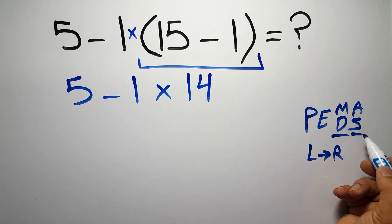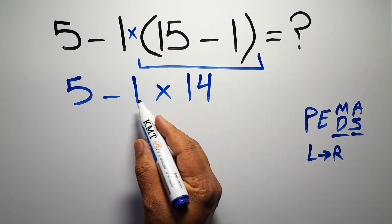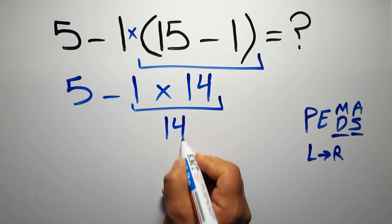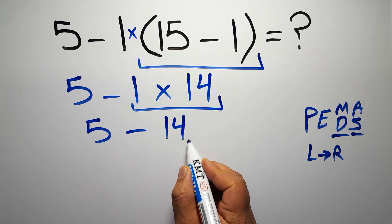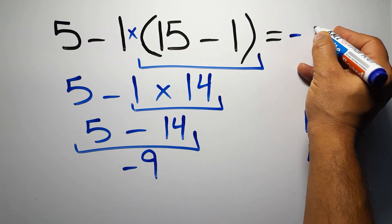Because multiplication comes before subtraction, first we have to do this multiplication: 1 times 14 equals 14, so 5 minus 14, which equals negative 9. This is our final answer to this problem. The correct answer is negative 9.